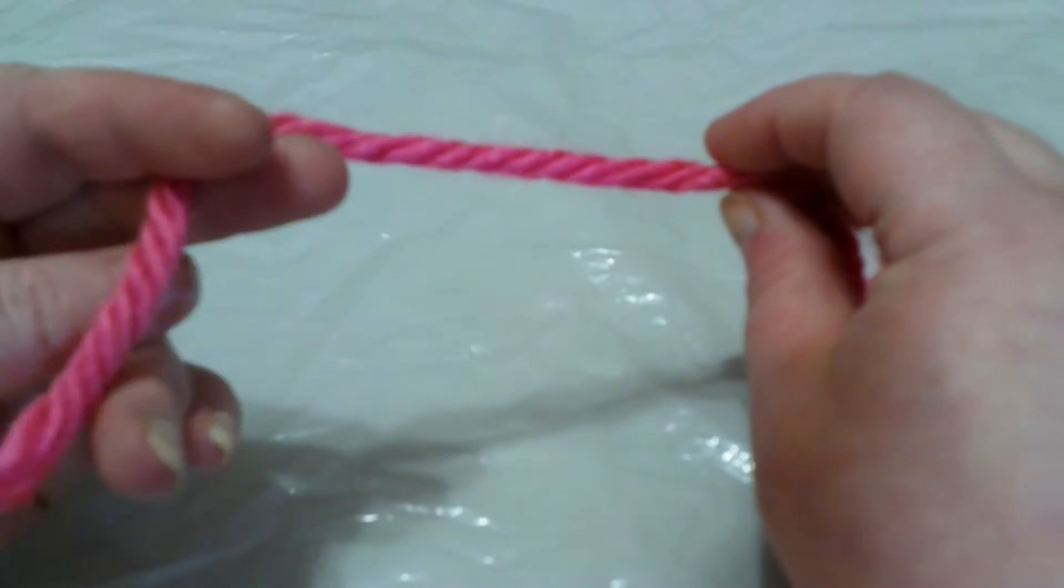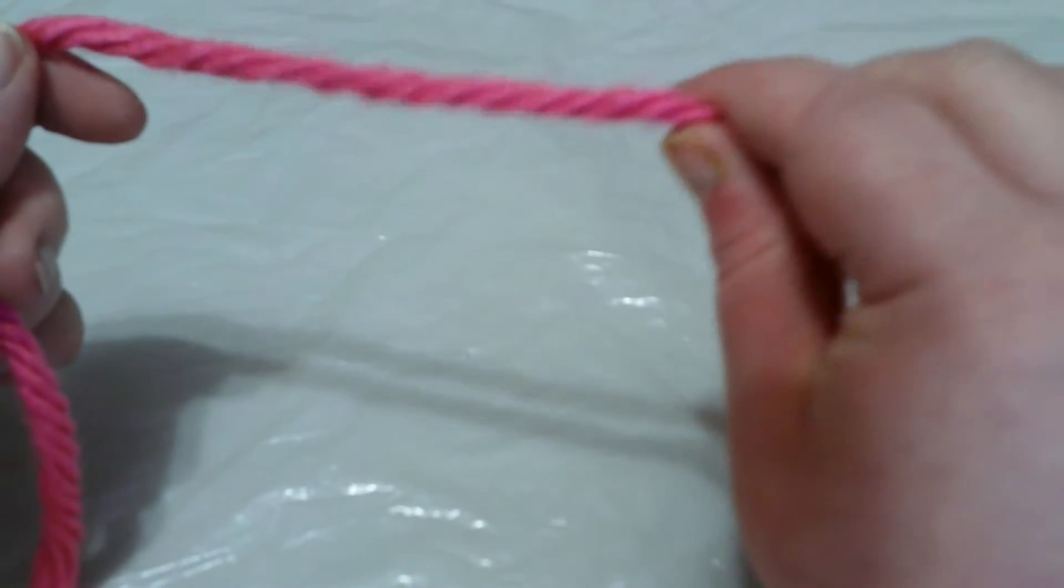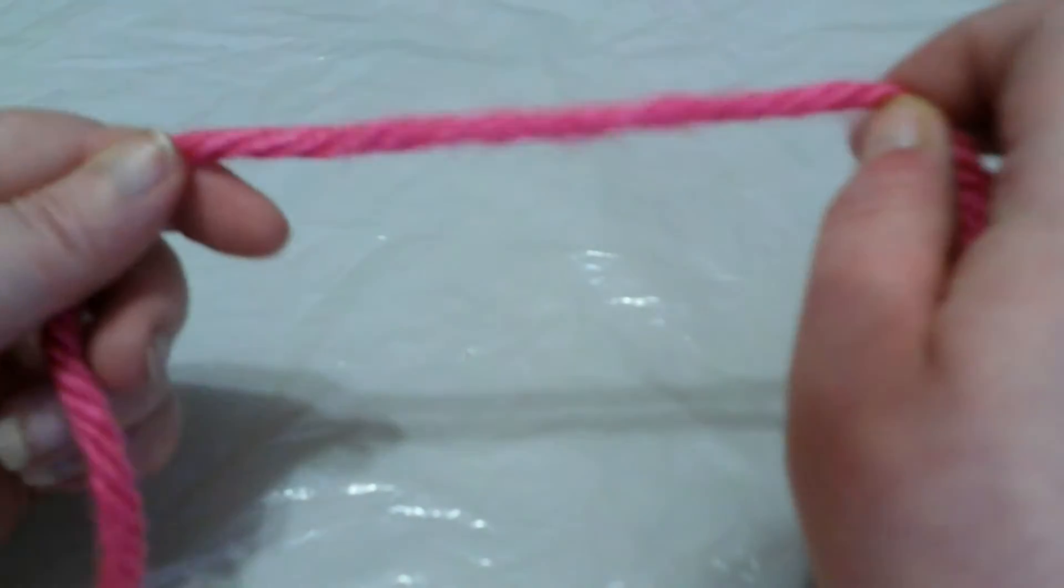Okay, you're going to want to put the piece of your yarn that's the cut piece in your left hand, and the part of the yarn that's connected to the whole skein is going to be in your right.